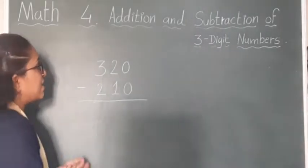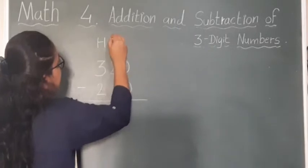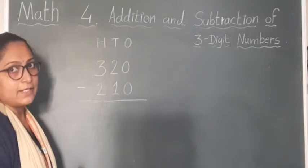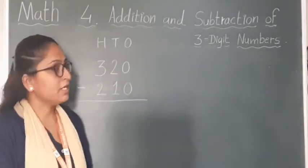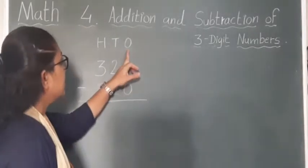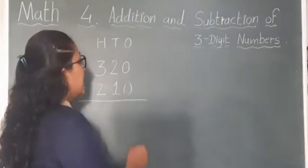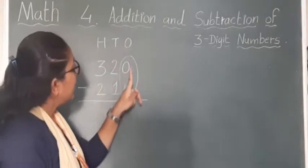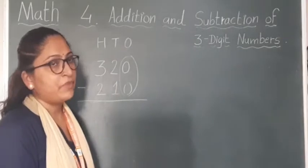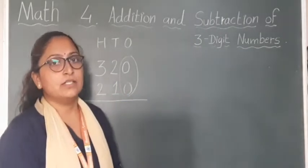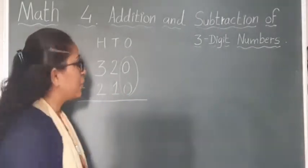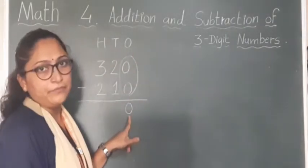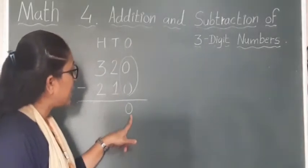Now first mention the places here: 100s place, 10s place, and this is the 1s place. Let's start with the first step. In the first step we have to start from the 1s place. In the 1s place there is 0 in the first number and also 0 in the second number. 0 ones minus 0 ones, so we will get 0. We have to write down 0 in the 1s column.